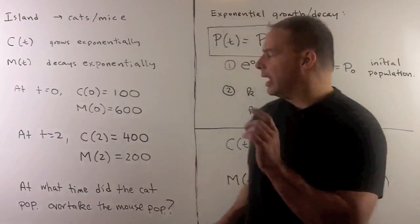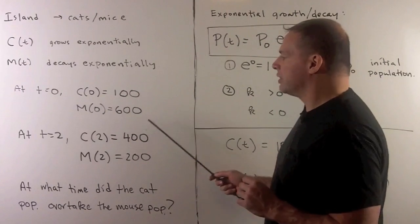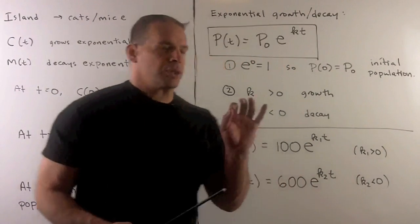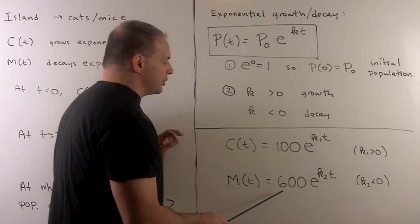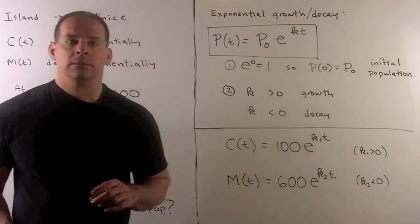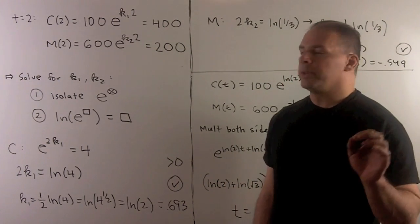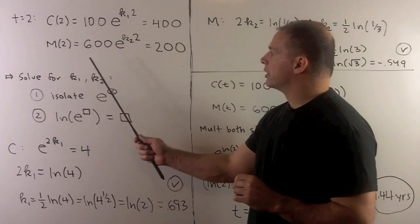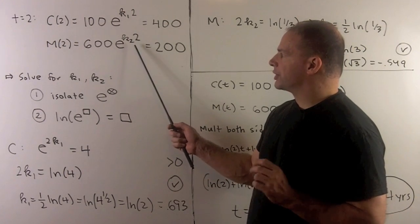Now, we're given at t equals zero, we have 100 cats and 600 mice. So that's our first step to set up our formulas. We can put in the initial populations. If we use the conditions for t equals two, we obtain the two equations. Note, the only variable here is k₁. The only variable here is k₂.